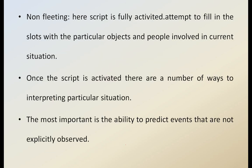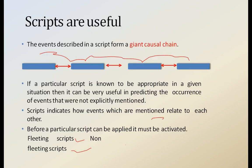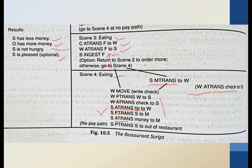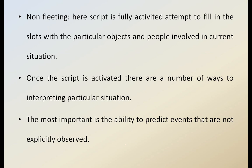Non-fleeting scripts are fully activated. They attempt to fill in slots with particular objects and people involved in the current situation. Once activated, a non-fleeting script can be used to interpret a situation in multiple ways. Most importantly, non-fleeting scripts have the ability to predict events that are not explicitly observed. Unlike fleeting scripts, which are not tied to any particular context and can recur anywhere, non-fleeting scripts refer to a particular context with specific objects and people.